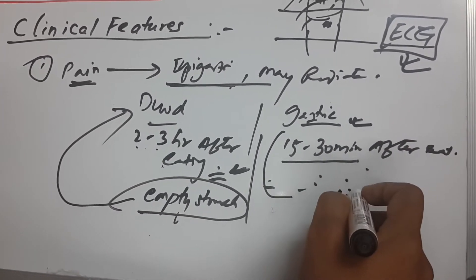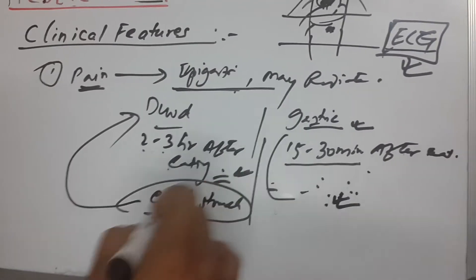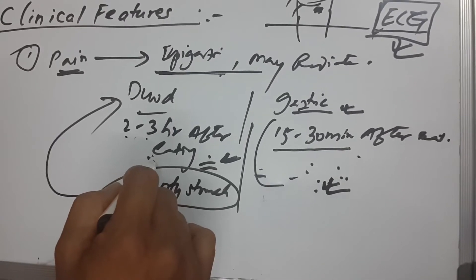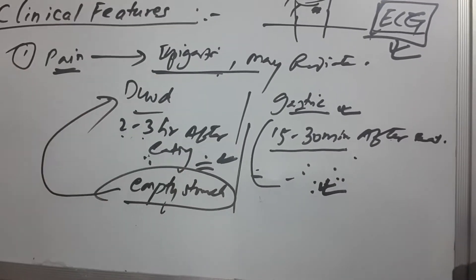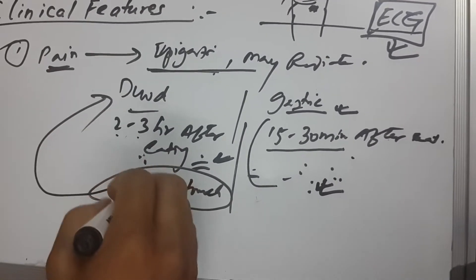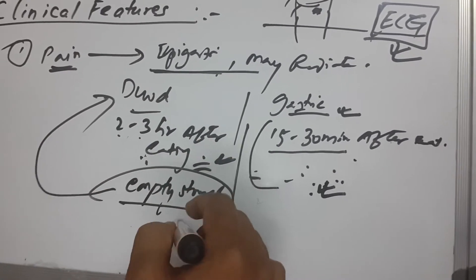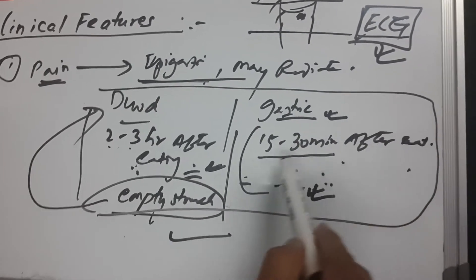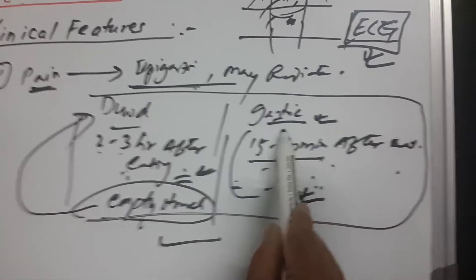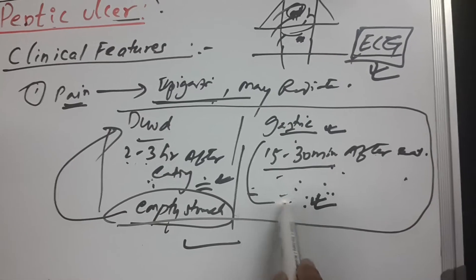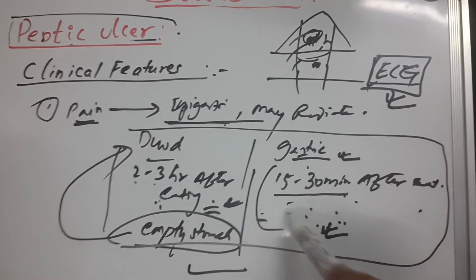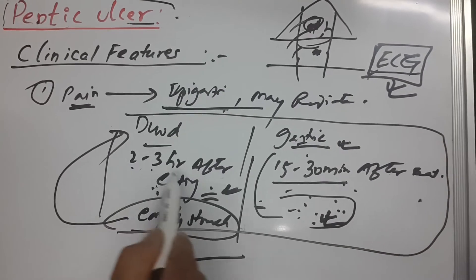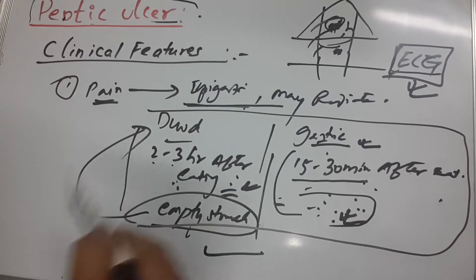This is very important. Pain that increases 2 to 3 hours after eating is due to duodenal ulcer, and acid-induced pain is believed to be due to acid stimulation of chemical receptors. To summarize: pain 15 to 30 minutes after eating is gastric ulcer; pain 2 to 3 hours after eating, or on an empty stomach, is duodenal ulcer.